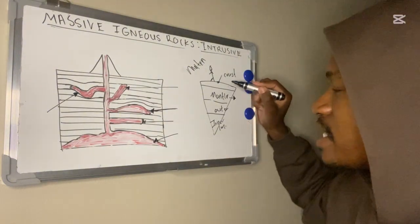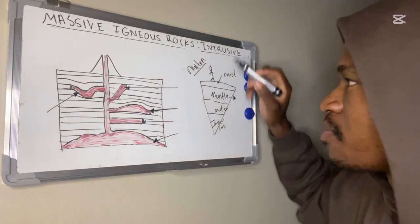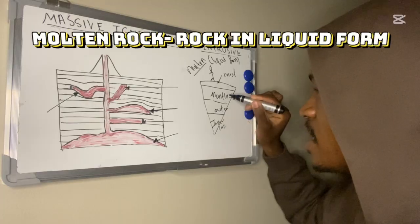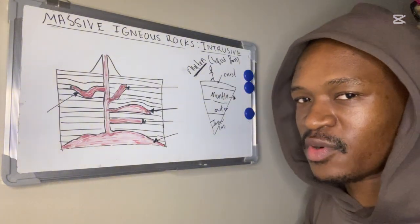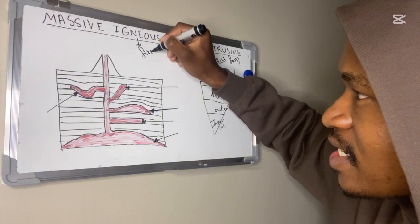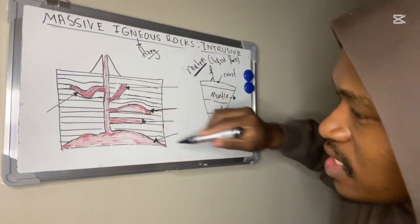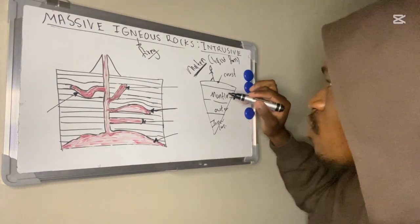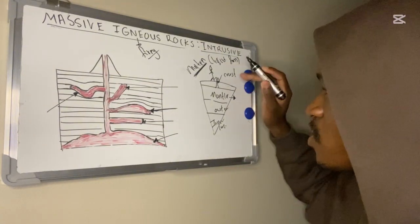I want us to focus on the mantle and the crust. The mantle is made up of molten material — the word molten means liquid form. This rock in liquid form in the mantle is molten magma. The word igneous means fire — it means fiery. In the mantle the rock is in liquid form, and when it erupts as a volcano we get lava on the surface, which is also extremely hot.